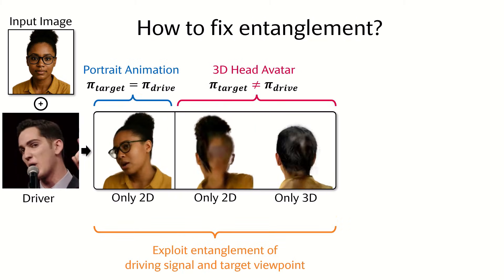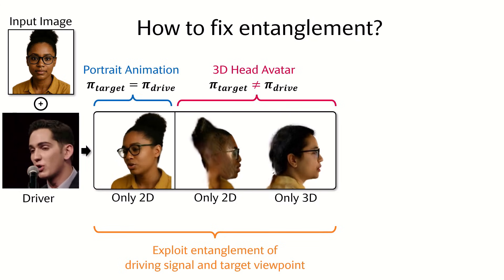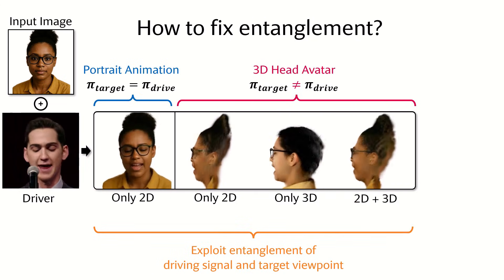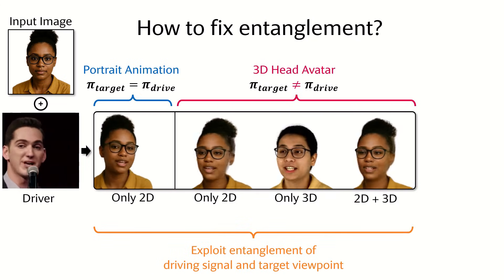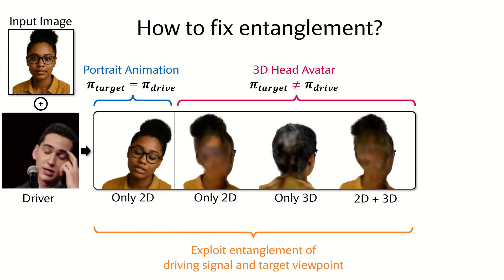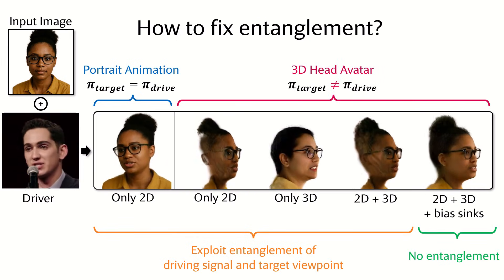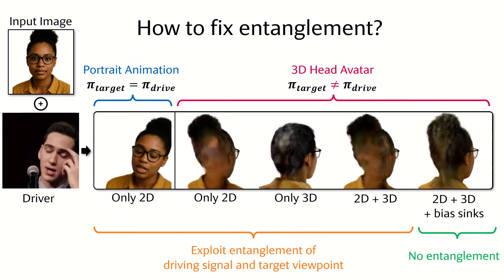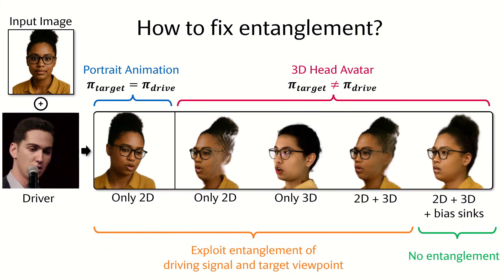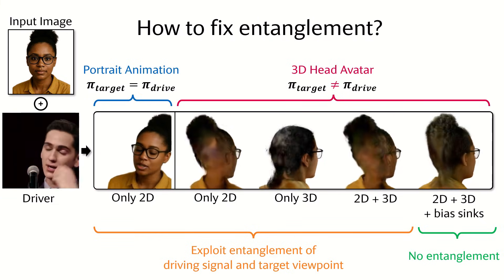Simply mixing monocular and multi-view data does not resolve this issue. Instead, we propose so-called bias syncs that help bridge the gap between monocular and multi-view data, leading to both complete and generalized 3D head avatars.